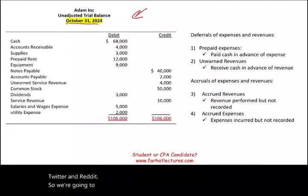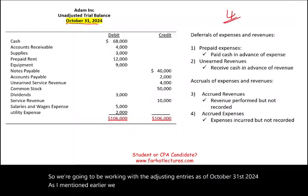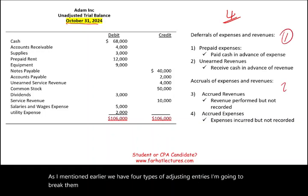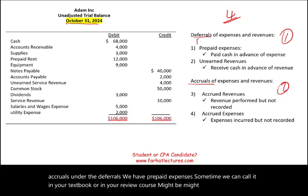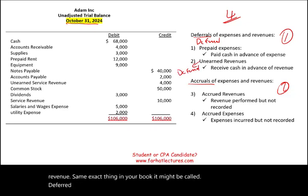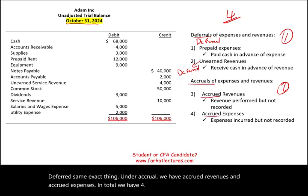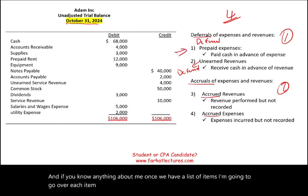We're going to be working with adjusting entries as of October 31st, 2024. We have four types of adjusting entries, and I'm going to break them down into two main groups: deferrals and accruals. Under deferrals, we have prepaid expenses — sometimes called deferred expenses — and unearned revenue, sometimes called deferred revenue. Under accruals, we have accrued revenues and accrued expenses. In total, we have four types, and I'm going to go over each item separately, starting with prepaid expenses.